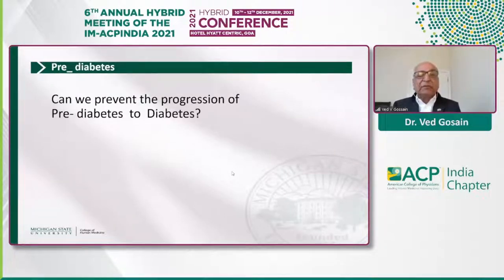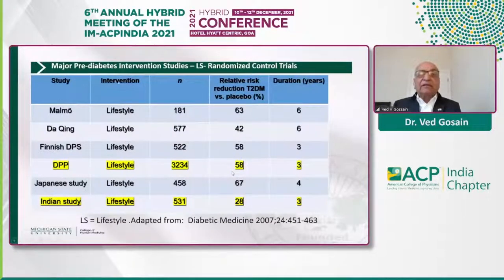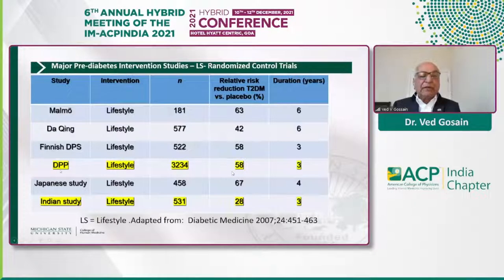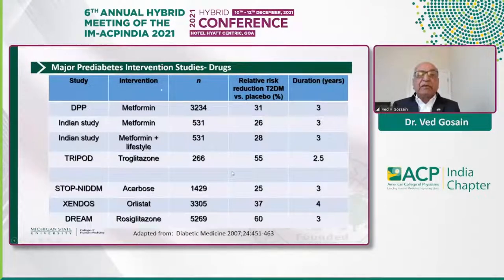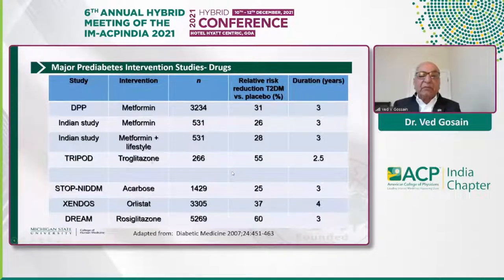Can we prevent the progression of pre-diabetes to diabetes? The answer is yes. There are several randomized controlled studies looking at lifestyle modifications to prevent this progression. We'll talk briefly about the diabetes prevention program and the Indian study. There are also multiple studies looking at drugs as an intervening means — metformin, troglitazone, and acarbose — but we're not going to discuss those much due to lack of time.